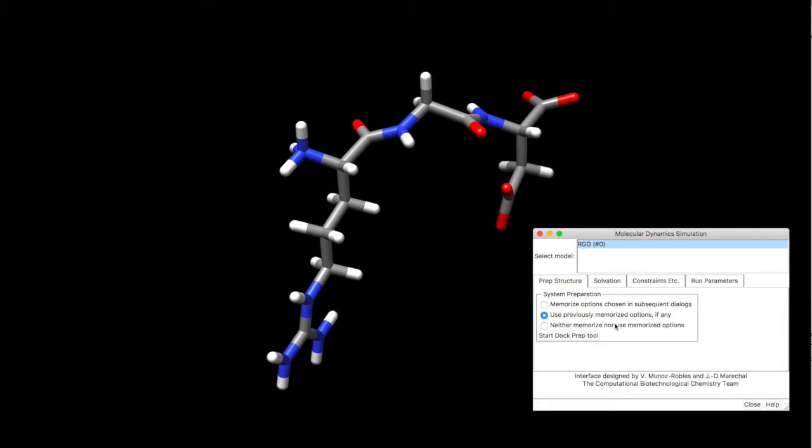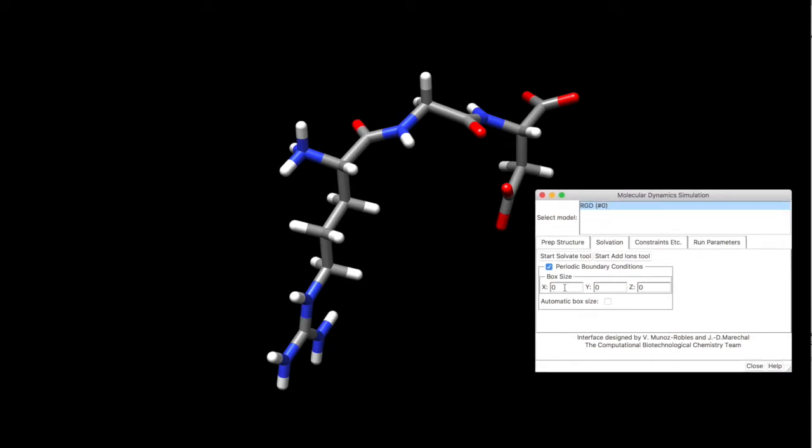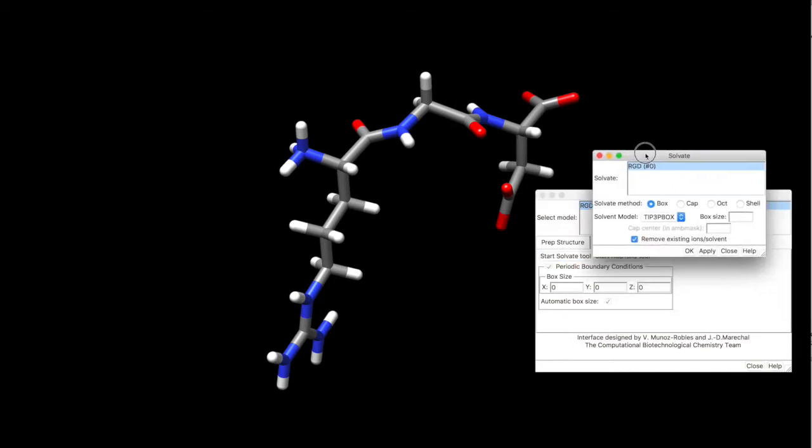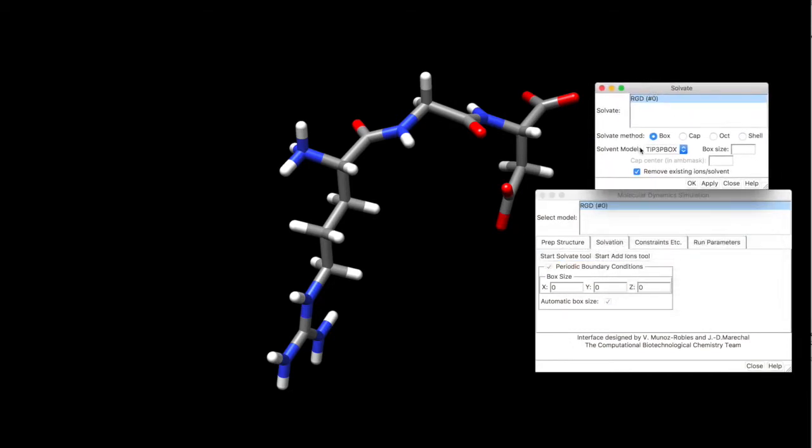Now we are ready for step 2, which will be the solvation. Now we are going to use periodic boundary conditions, we are going to create a box size, let's do automatic box size here, click on start solvate tool, another dialog opens.